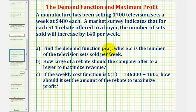P of X would be the price. Part B: how large of a rebate should the company offer to a buyer to maximize revenue? And Part C: if the weekly cost function is given, how should it set the amount of rebate to maximize profit?